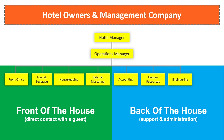The engineering department maintains all facilities and equipment of the hotel. Its functions include inspection and repair of various energy supply equipment such as heating and cooling systems, plumbing, lighting, and kitchen equipment. Additional functions include fixing furniture, repairing floors, ceilings, doors, and installing new products.